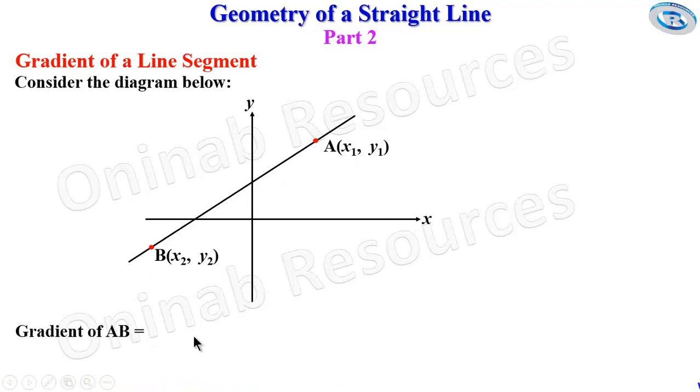If you have to calculate the gradient of this line, the gradient of AB will be equal to y2 minus y1 over x2 minus x1. Please note that you can also have it as y1 minus y2 over x1 minus x2. Just make sure that the order is corresponding.